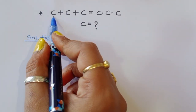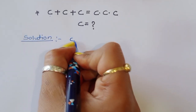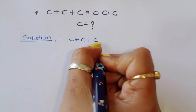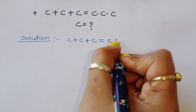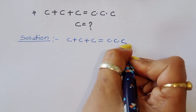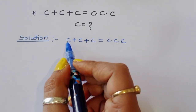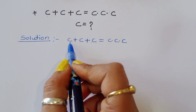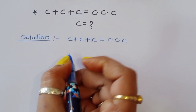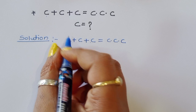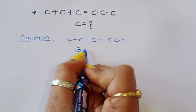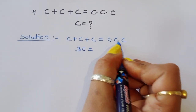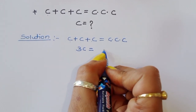The question is c plus c plus c is equal to c times c times c. Now, c plus c plus c — we can write this as 3c. So, 3c is equal to c times c times c, which becomes c cubed.